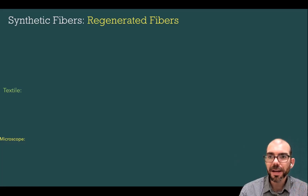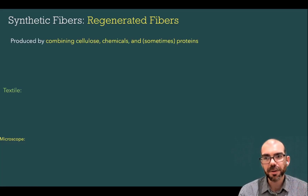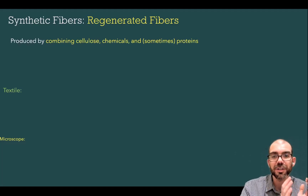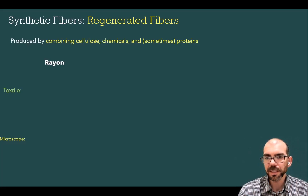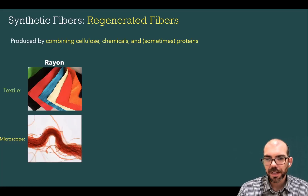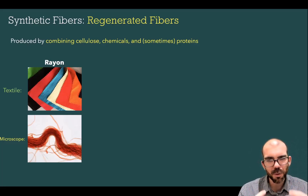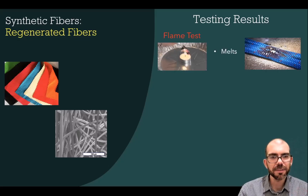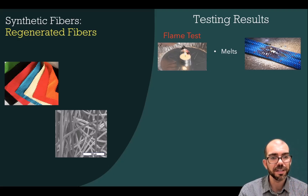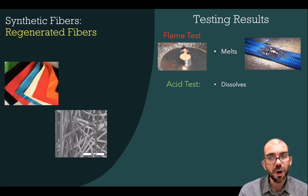Next up are regenerated fibers. A reminder that synthetic fibers like regenerated fibers are produced by combining natural components such as cellulose or sometimes proteins with man-made chemicals, typically petroleum or oil. A common regenerated fiber is rayon — under the microscope it has some of the frayness of natural fibers, but is much sturdier with a more robust color than you would see in nature. Another is acetate, which shows smooth bands under the microscope. On a flame test, regenerated fibers will melt instead of burning — a big giveaway that there's a synthetic compound in the textile. An acid test will dissolve any regenerated fiber.